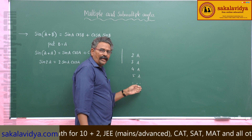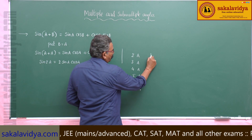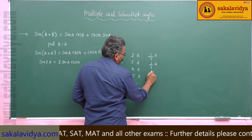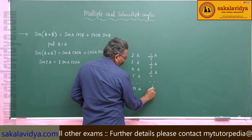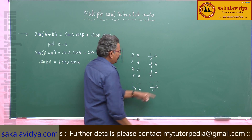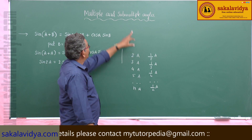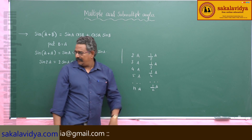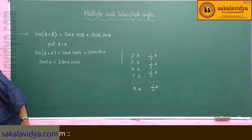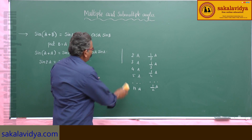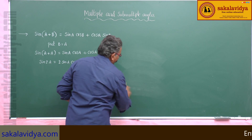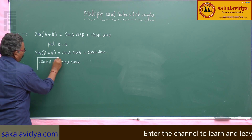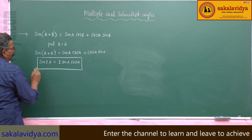Similarly, if the angle is a multiple of 1/2, 1/3, 1/4, and so on — that is, a/n — these angles are called submultiple angles. We shall discuss submultiple angles later. First, we go into detail about multiple angles. The first formula is sin 2a equals 2 sin a cos a.